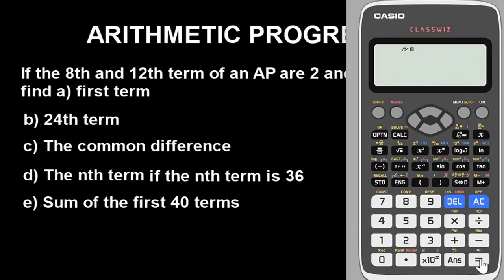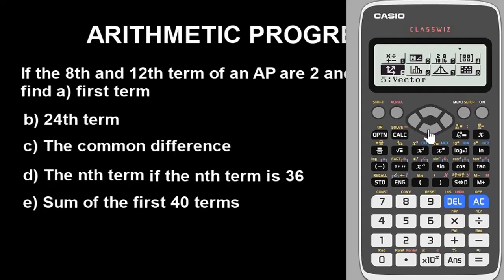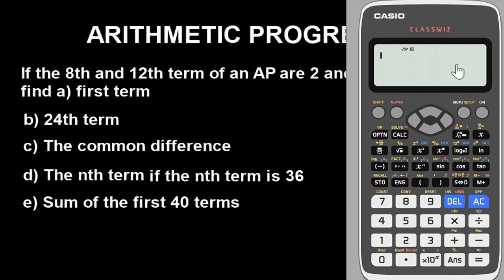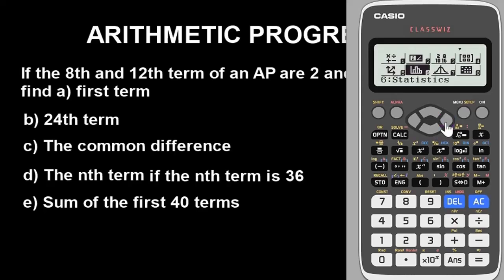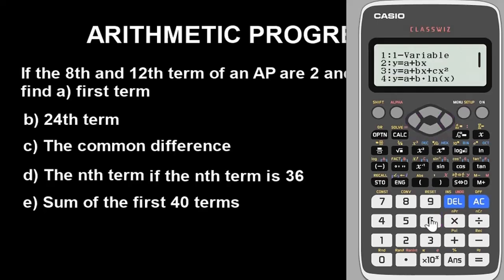Now put the calculator in the mode we need to solve this problem, which is Statistics mode. Statistics mode is what helps us solve arithmetic progression. Press Menu, look for Statistics — it is option 6. That gets us into Statistics mode.